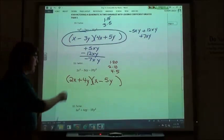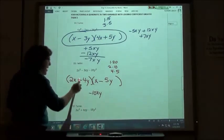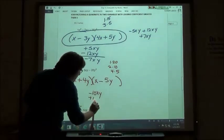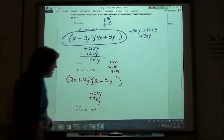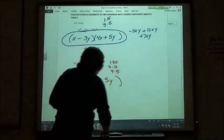And if I check that, my outside product is negative 10xy. My inside product is positive 4xy. Negative 10 plus 4, not 3. So I switch them around.